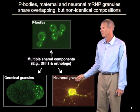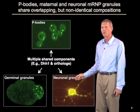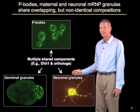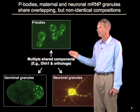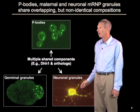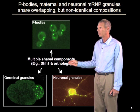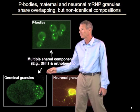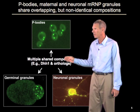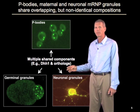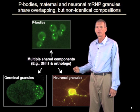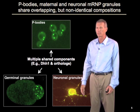Similarly, neuronal granules, which play an important role in synaptic plasticity and transport RNAs out to various synapses, also share components with p-bodies, and also share components with germinal granules. So all three of these types of RNA granules are related, and probably have an underlying similar biochemical and compositional function.